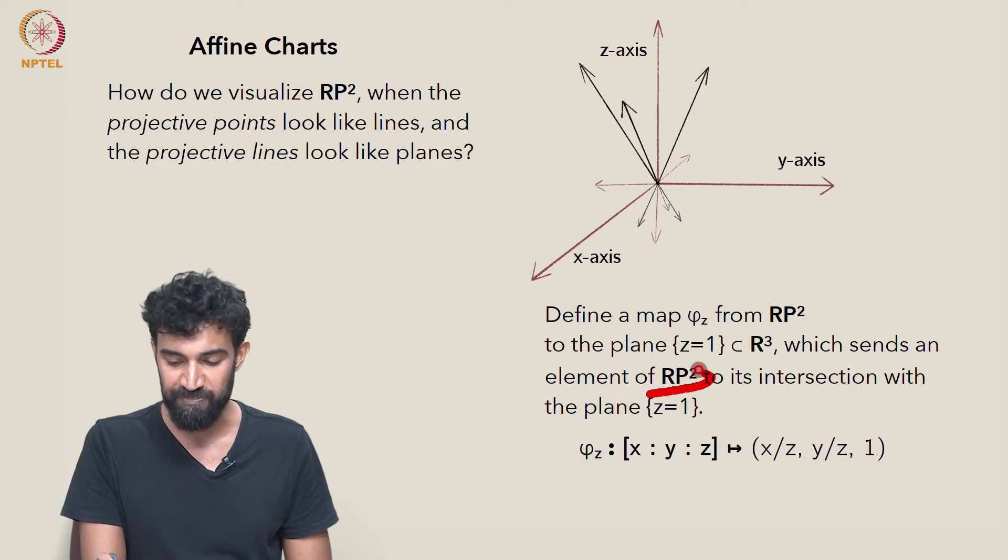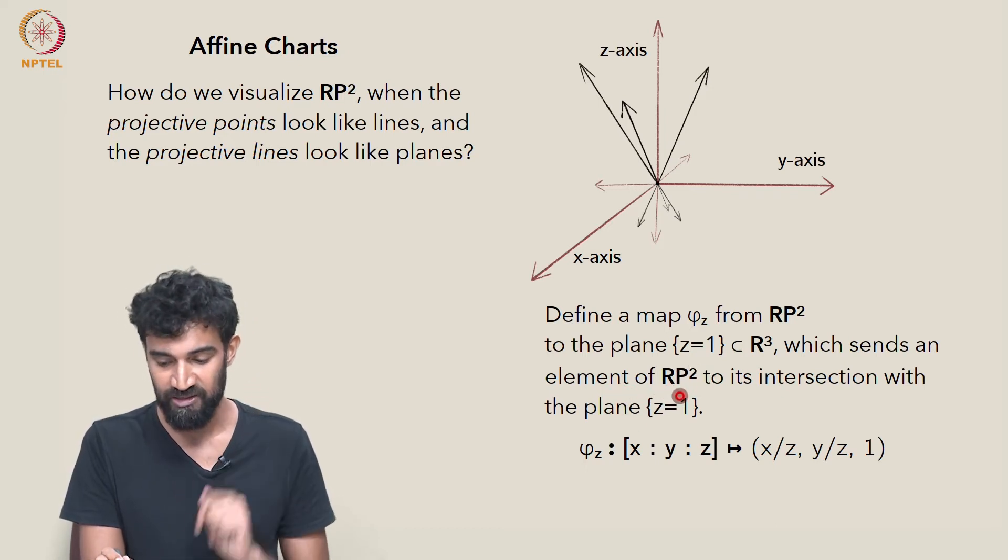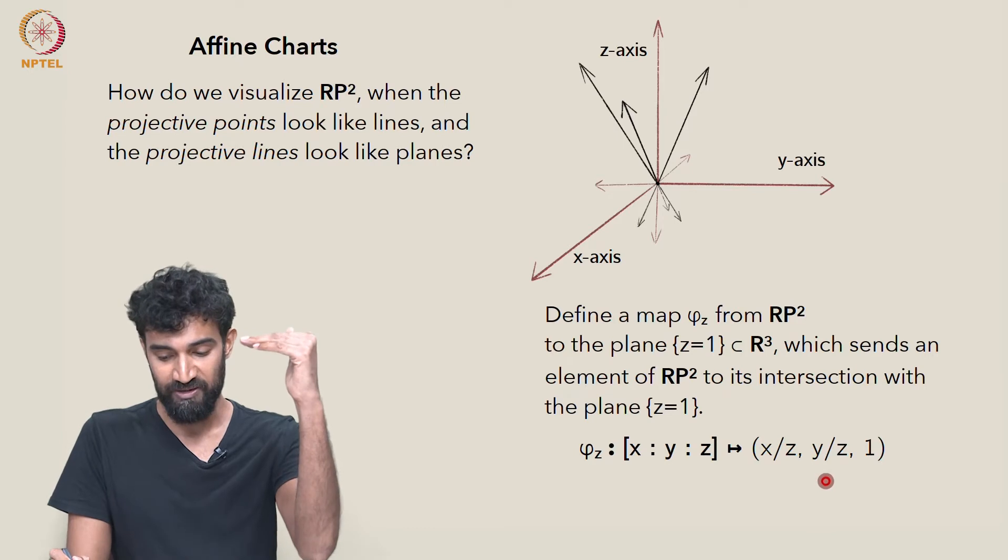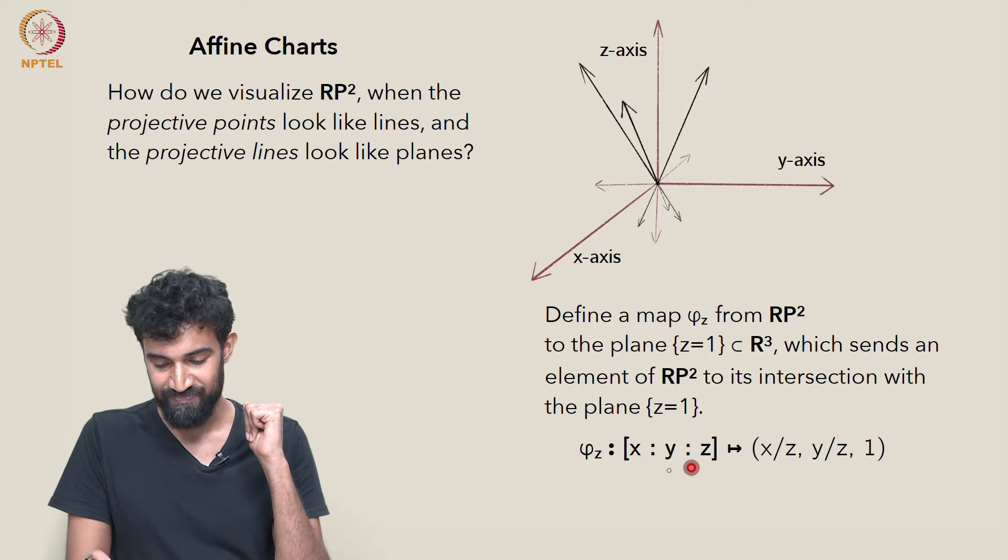And the way this map works, it sends an element of RP², in other words it sends a line through the origin in R³, to its intersection with the plane z equals 1. In homogeneous coordinates x:y:z, φ_z is going to send that to its intersection with the plane z equals 1, which we can find just by dividing every coordinate by z to get the representative sitting on the plane z equals 1.